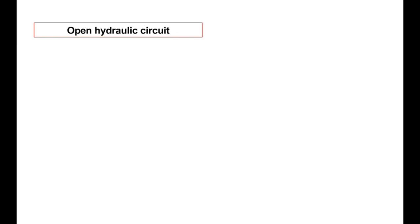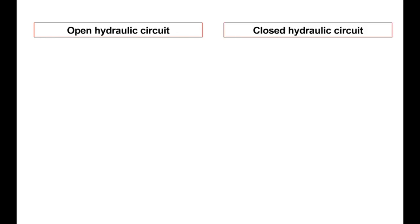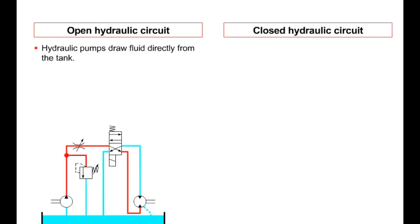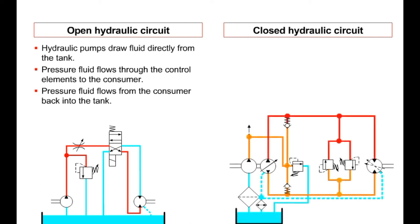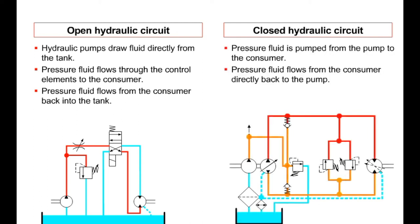We generally differentiate between two types of circuits: open hydraulic circuits and closed hydraulic circuits. In an open circuit, the hydraulic pump draws fluid from the tank and feeds it to the consumer via the control elements — in this example, the hydraulic motor is the consumer. The fluid then flows from the consumer back into the tank. We speak of a closed hydraulic circuit when the fluid flowing back from the consumer is fed directly back into the hydraulic pump.